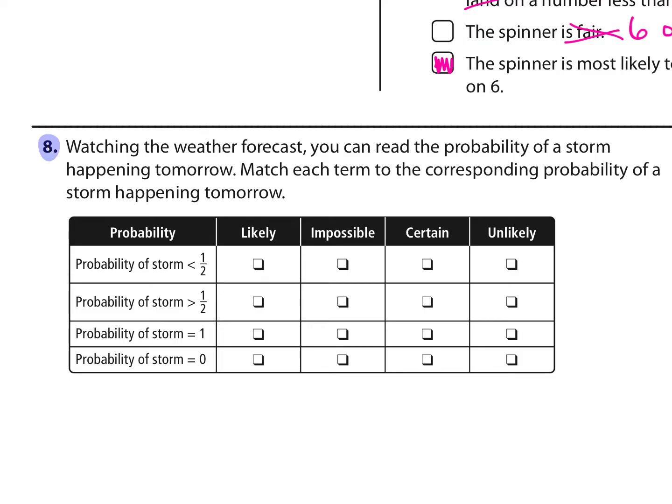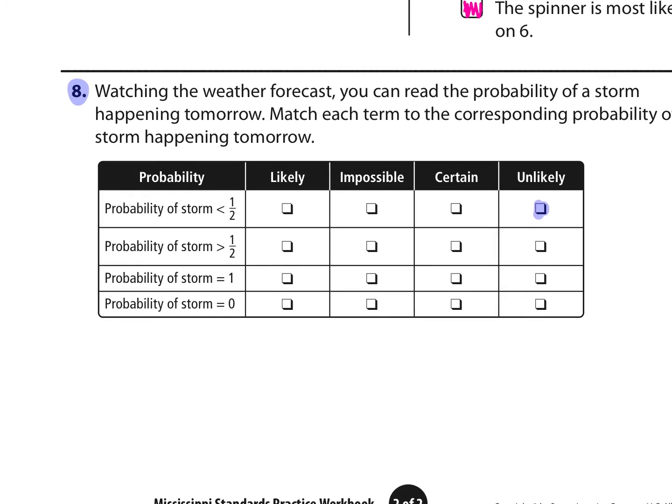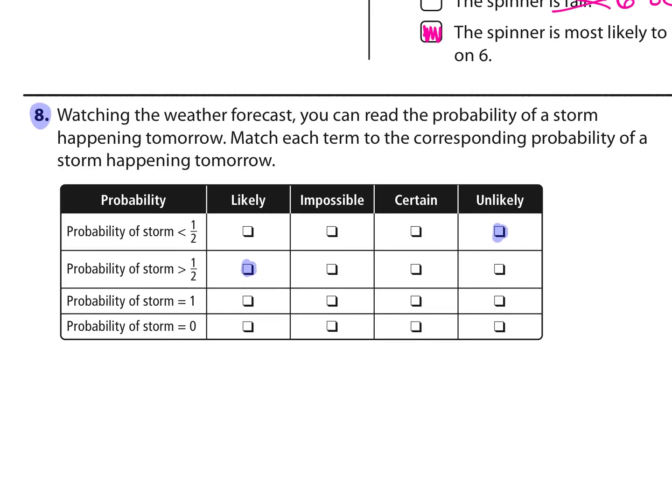Number 8. Watching the weather forecast, you can read the probability of a storm happening tomorrow. Match each term to the corresponding probability of a storm happening tomorrow. The first says the probability of a storm is less than half, so it's unlikely to happen if there's less than half a chance of it happening. The next one says the probability is greater than half. Well, that means it's likely to happen. There's more than half a chance, so more than likely it'll happen.